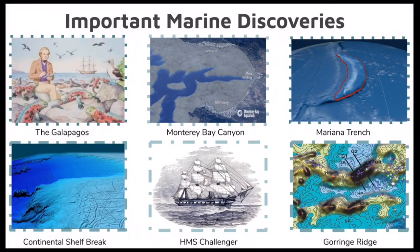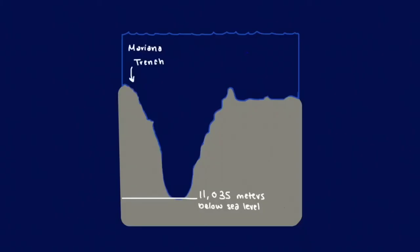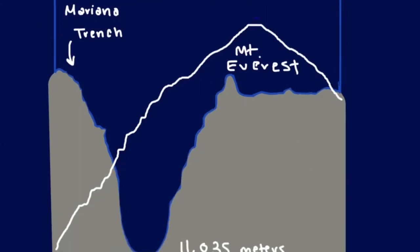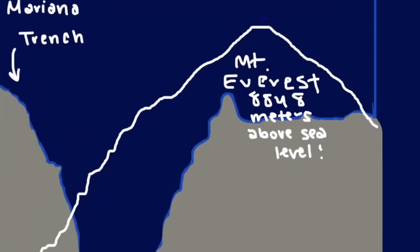Three years later, the HMS Challenger discovered one of the deepest known parts of the ocean, the Mariana Trench, in the western Pacific, where the sea floor is 26,000 feet, or more than four miles deep. Here you can see the Mariana Trench being compared to the height and altitude of Mount Everest, which is the highest mountain on land.